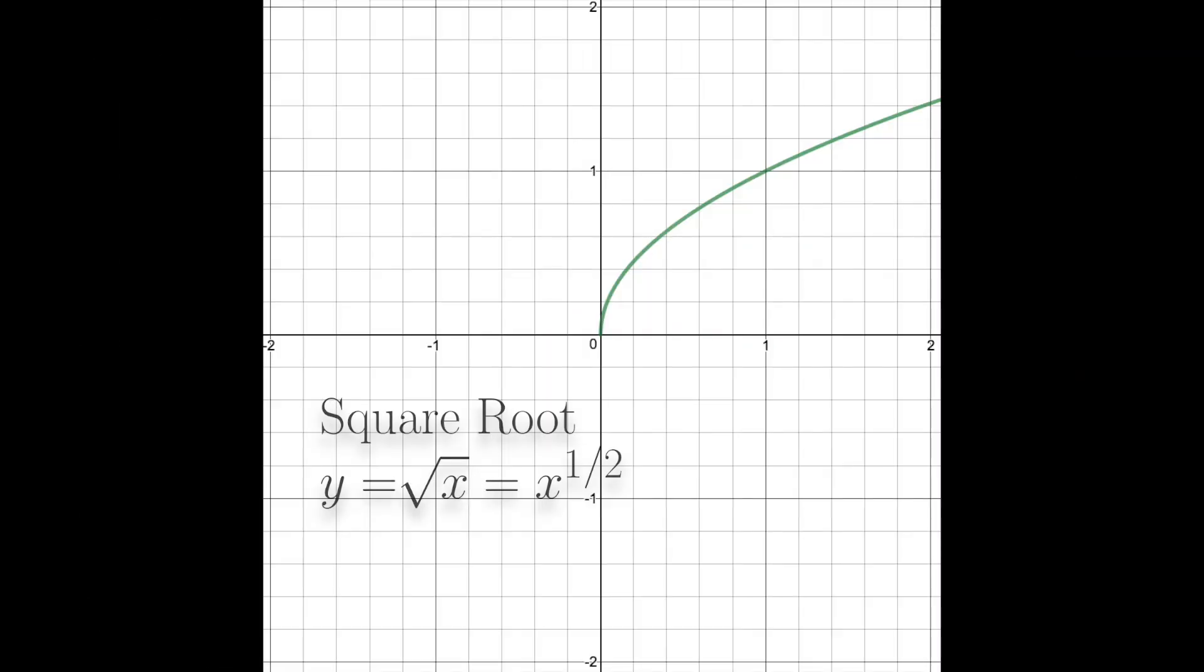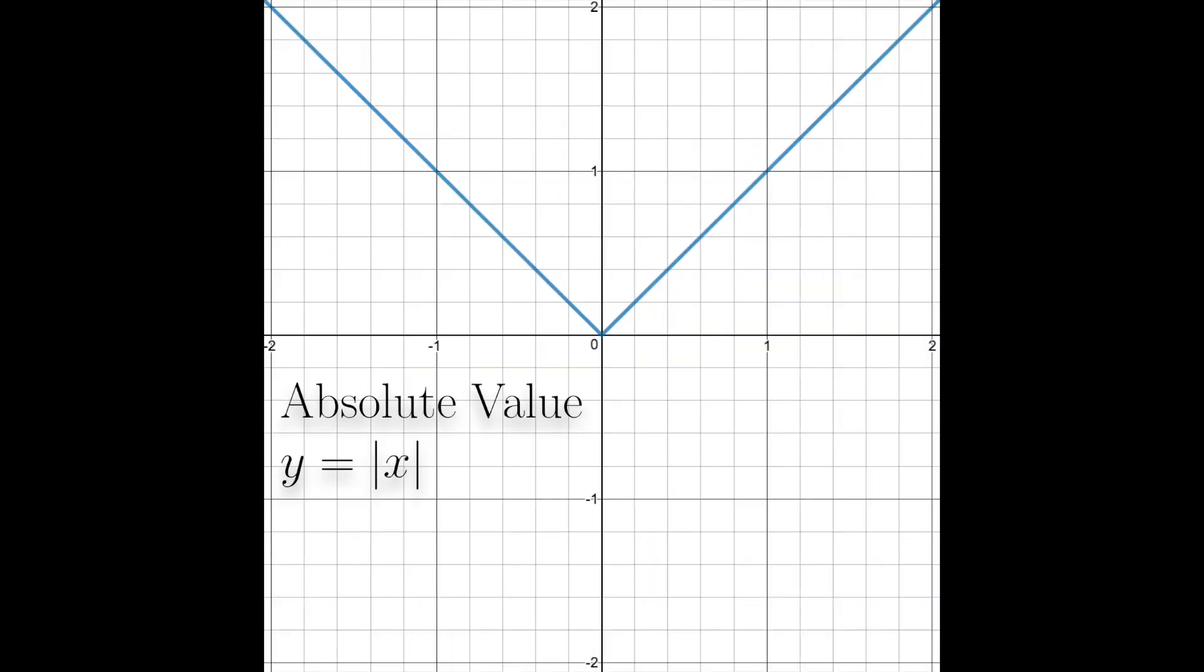The square root is basically going to be like a quadratic, only half of it, and then it's tilted to the side. Absolute value is going to be like a V—I always kind of remember that.